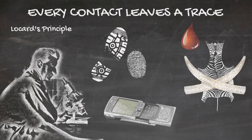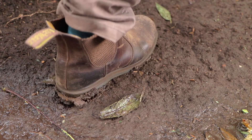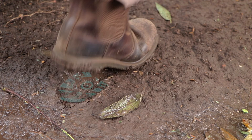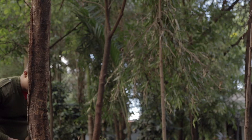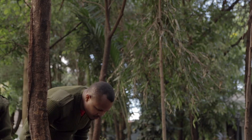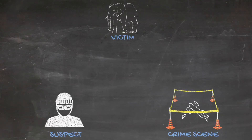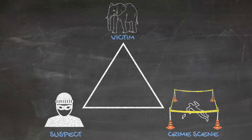For example, when a poacher enters a crime scene they may leave boot marks, but similarly sand or mud particles are left on their boots. It is these traces that an investigator is looking for, as they can link a suspect to a crime scene and to a victim, and link the victim back to the crime scene.